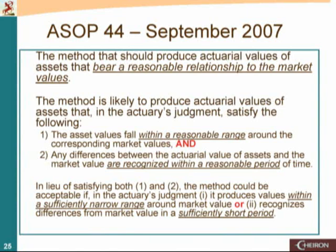I've read this over and over again. It seems to say one thing and then undoes it by saying something else. So when it talks about the method, the asset smoothing method should produce actuarial values of assets that bear a reasonable relationship to the market value. The method is likely to produce an actuarial value of assets that in the actuary's judgment satisfies the following: the asset values fall within a reasonable range around the corresponding market values, and — I emphasize 'and' — any difference between the actuarial value of assets and the market value are recognized within a reasonable period of time.